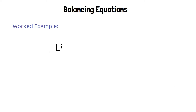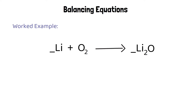Here's an example of a question where you need to balance the equation. I'm starting with lithium and oxygen and I'm producing lithium oxide. I'm going to start by counting the number of lithium atoms in the reactants and products. I have one atom of lithium in the reactants and two in the products — this isn't balanced. If I put a number two in front of the lithium in the reactants, I now have two atoms of lithium in the reactants and two in the products, so that's now balanced.